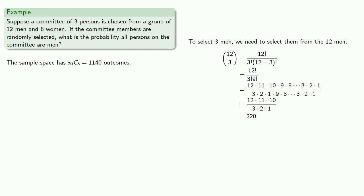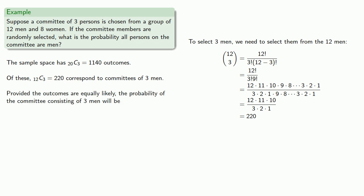And so, of our 1,140 outcomes, of these, 12 combined 3, 220, correspond to committees of 3 men. And now we're ready to state our probability, provided the outcomes are equally likely, the probability of the committee consisting of 3 men will be 220 over 1140, or about 1 in 5.